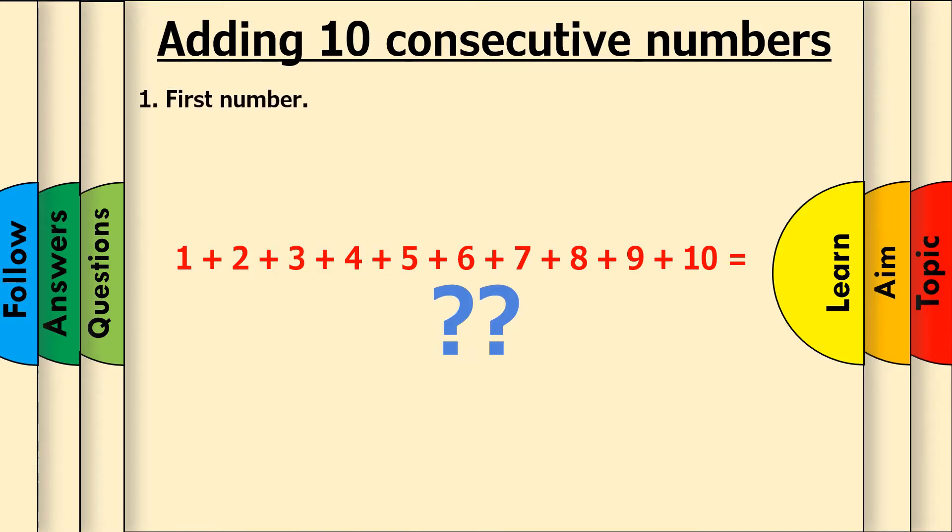First, write down the first number in the addition. Here, we have 1 as our first number, so write this down below. Now, let's add 4 to this. 1 plus 4 equals 5.